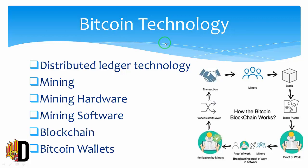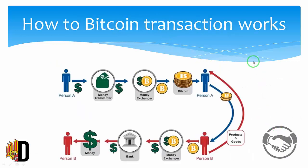Bitcoin can be mined or bought. There are many server machines needed for mining. We can also easily buy it using our wallet. Bitcoin transactions work like this: Person A transfers money in dollars and exchanges it to BTC, then sends it to Person B. Person B then converts the Bitcoin back to dollars and withdraws the amount.